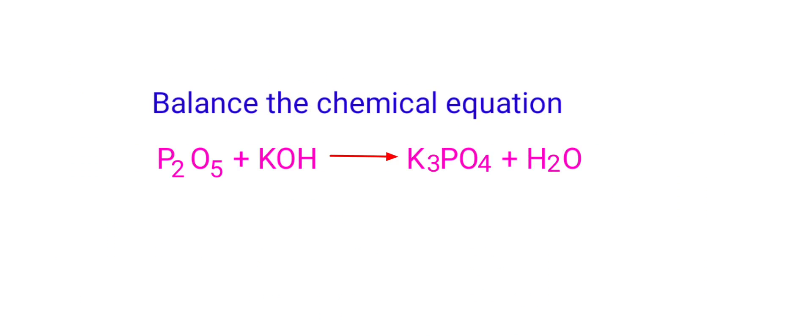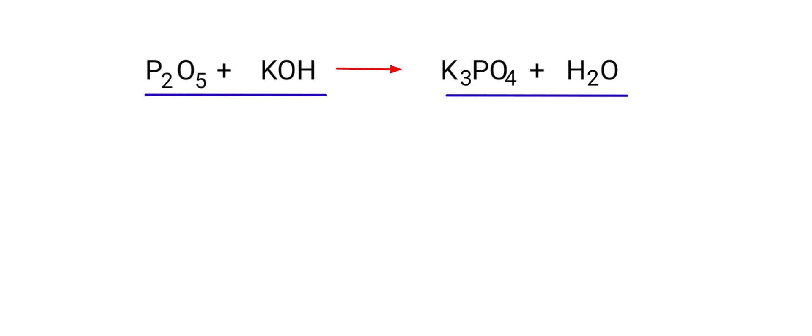We are balancing the chemical equation: Phosphorus Pentoxide plus Potassium Hydroxide gives us Tri-Potassium Phosphate plus Water. In this equation the reactants are Phosphorus Pentoxide and Potassium Hydroxide, and the products are Tri-Potassium Phosphate and Water.